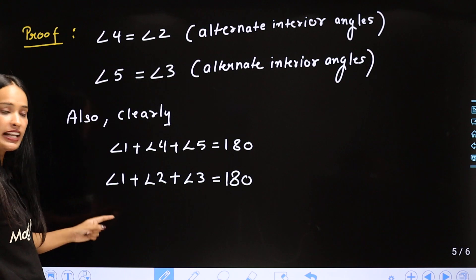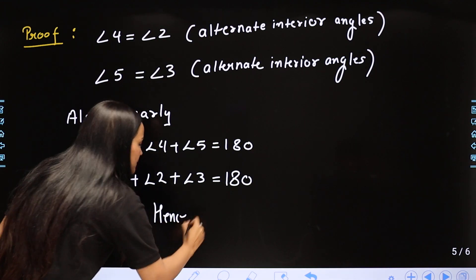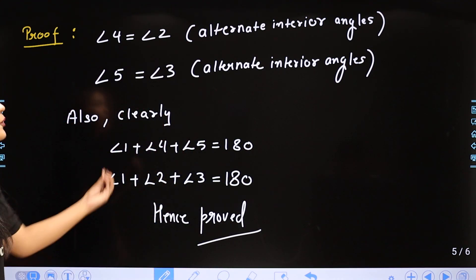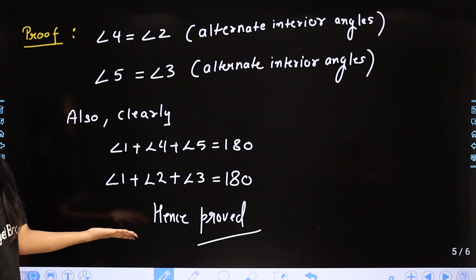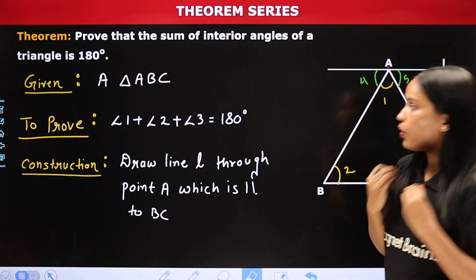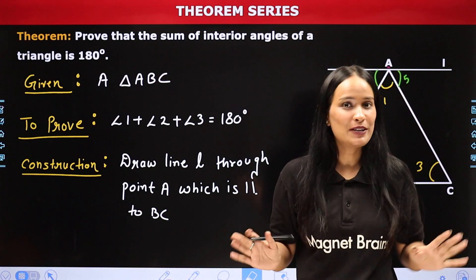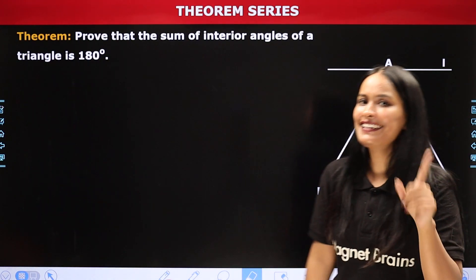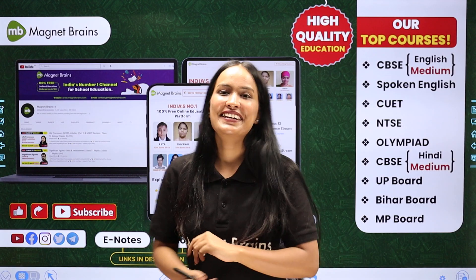बच्चा, ये तो वो ही हो गया जो prove करना था। Angle 4 को angle 2 से और angle 5 को angle 3 से replace करने पर: angle 1 plus angle 2 plus angle 3 is equal to 180 degree। Hence proved। अगर theorem लिख रहे हो तो ये जरूर लिखो। So students, next series में मिलूँगे एक नई theorem के साथ। Till then याद रखेगा: the sum of interior angles of a triangle is 180 degree। पढ़ते रहिए Magnet Brains के साथ।